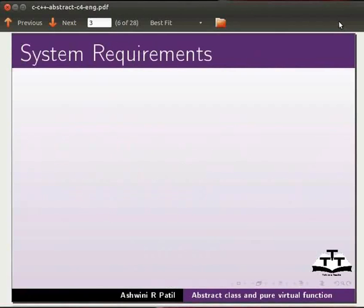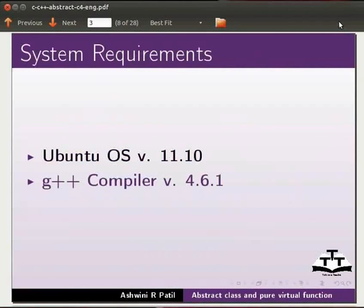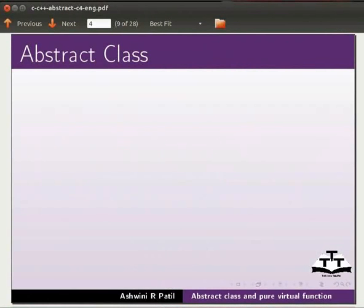To record this tutorial I am using Ubuntu operating system version 11.10, G++ compiler version 4.6.1. Let us start with an introduction to Abstract class.